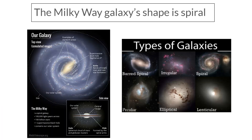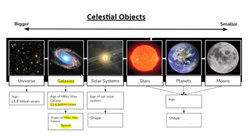The Milky Way galaxy's shape is spiral — notice these spiraling arms. Our solar system is on the side, and in the center of our galaxy there's a black hole. Not all galaxies are shaped like this; there are other different shapes of galaxies. But our galaxy, the Milky Way, is shaped like a spiral. Galaxies formed at many different times, but our specific galaxy formed around 2 billion years after the universe formed — so around 13.6 billion years ago.